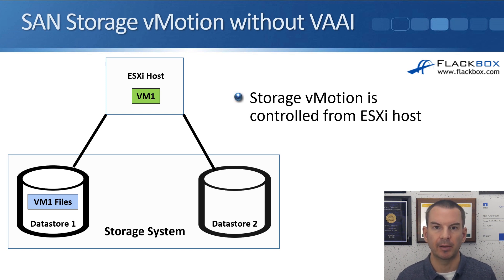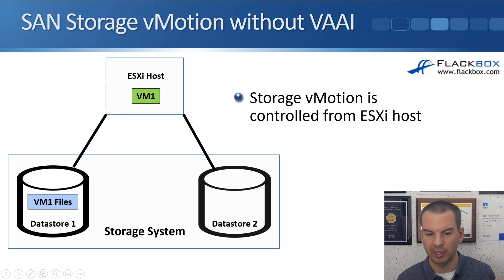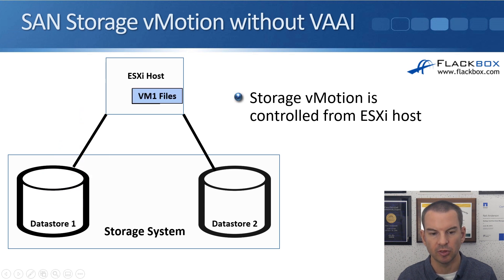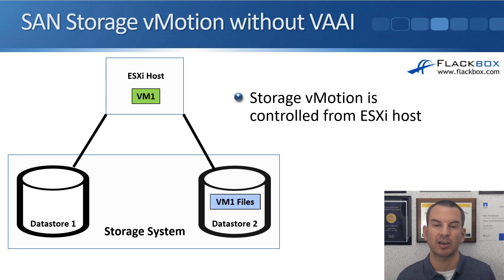In this first example, we do not have VAAI enabled. You can see my ESXi host, which is running virtual machine 1, and I want to move the virtual machine's files from datastore 1 to datastore 2 on the same storage system. When we run that Storage vMotion, the files are going to be passed through the ESXi host on the way from one datastore to the other. That is going to take up resources on the ESXi host and also network bandwidth.